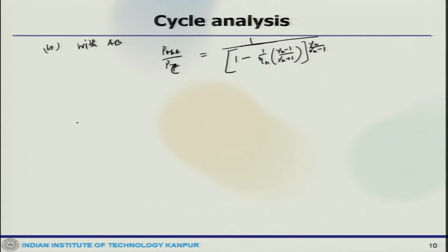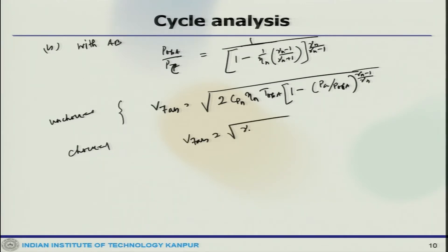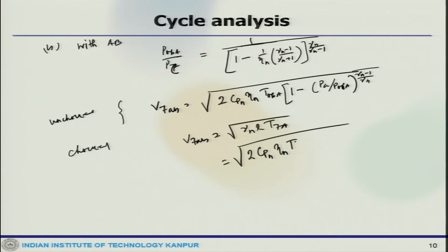If the nozzle is unchoked, the exhaust pressure will equal the ambient pressure, and the jet speed would be root of 2 C_p_n eta_n T_06A times (1 minus (P_A by P_06A) to the power (gamma_n minus 1) by gamma_n). If it is choked, V_7AB would be root over gamma_n R T_7A, and we can use the relationship with C_p_n eta_n T_06A times (1 minus (P_7 by P_06A) to the power (gamma_n minus 1) by gamma_n).